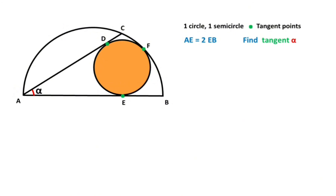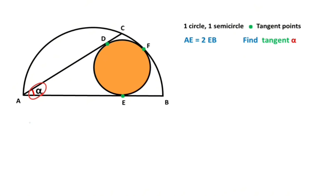Hello everyone. In this video we have one circle, one semicircle, and points E, F, and D, which are given as tangent points. The length of AE is given as two times the length of EB. The question is: what is the value of tangent alpha?